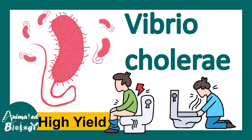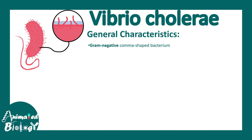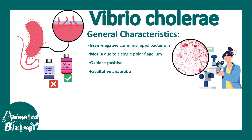In this video we'll talk about Vibrio cholerae and cholera. Vibrio cholerae is the causative organism behind cholera. It is a gram-negative, comma-shaped bacterium. Its cell wall doesn't retain crystal violet and instead gets stained with safranin. It is motile due to its single polar flagellum, and it is oxidase positive. It is a facultative anaerobe.